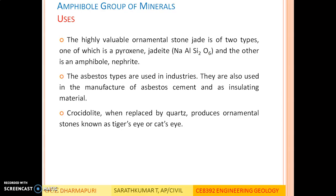Both pyroxene and amphibole group minerals are used as ornamental stones, but those are secondary uses only. The primary concern for civil engineering is that these are the main groups of minerals forming the major types of rocks. Except in sedimentary rocks, they occur commonly in both metamorphic and igneous rocks. We need to understand the physical, chemical, and optical nature of these minerals to better understand igneous and metamorphic rocks.